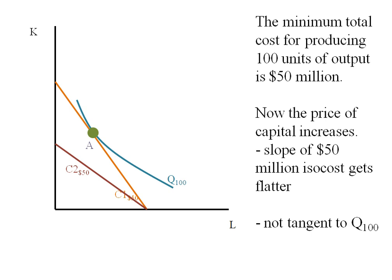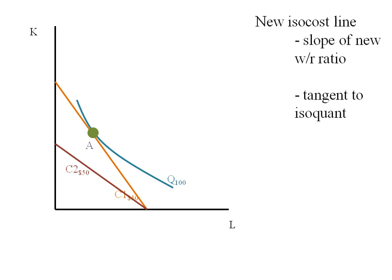Now this isocost line, $50 million, is no longer tangent to my isoquant. I'm going to have to draw a new isocost line that has the slope with this new wage to the rental rate of capital ratio, but is tangent to my original isoquant.